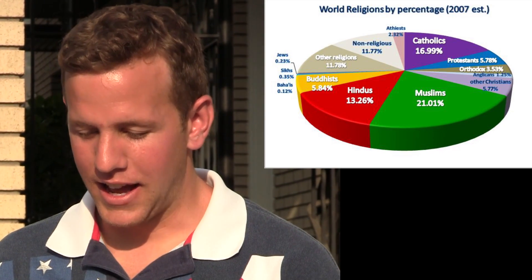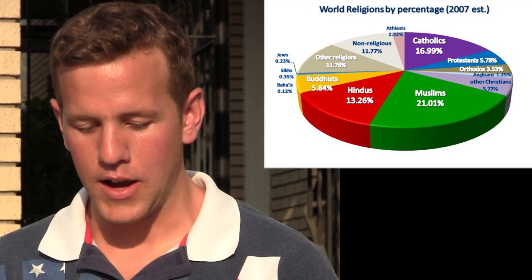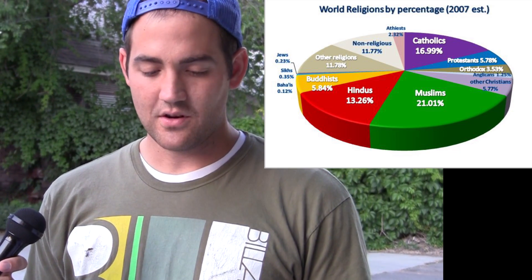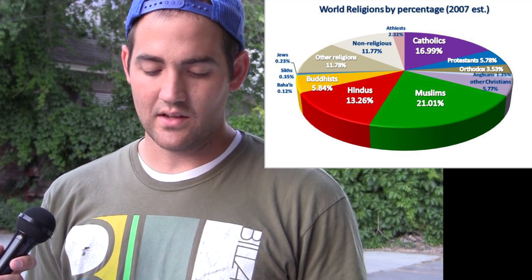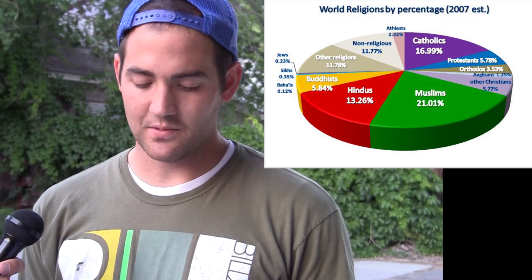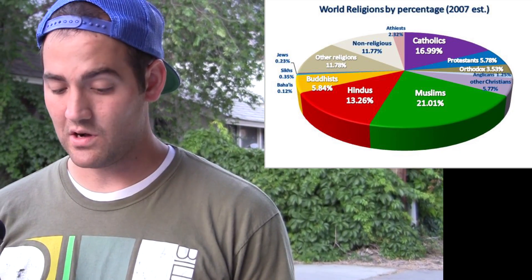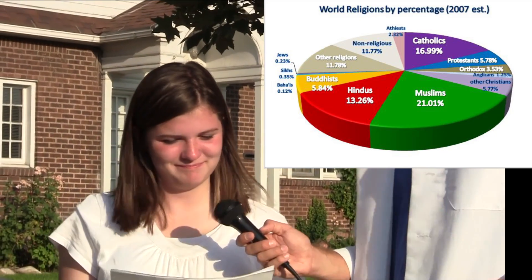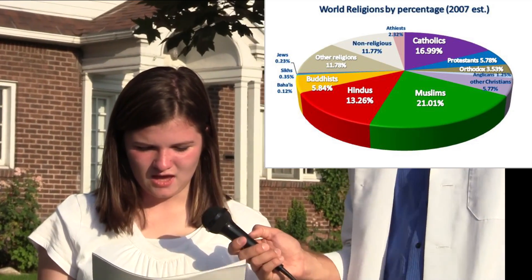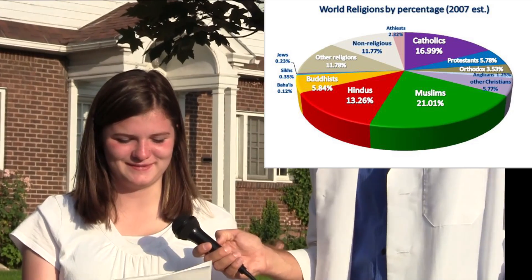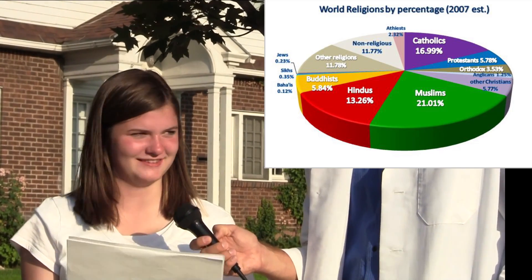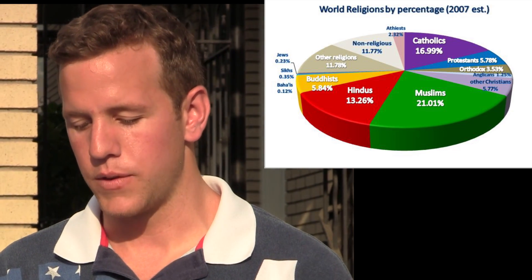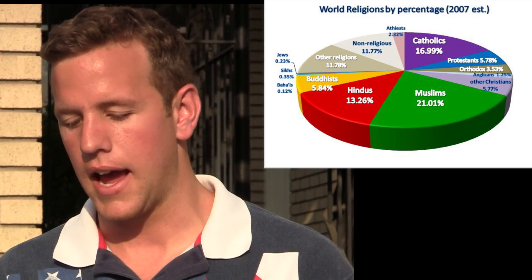What can you tell me about this graph? Well, it says in 2007, what is the percentage of religions around the world? So this graph is showing the percentage of different religions in the world. Twenty-one point one percent of the world is Muslim. Muslims are the most common. How do you know that? It's the biggest percentage in size and in percentage. So twenty-one percent of the world in 2007 was Muslim and seventeen percent was Catholic.